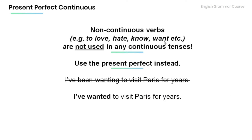Non-continuous verbs — for example, to love, hate, know, want, etc. — are not used in any continuous tenses. Make sure to use the present perfect instead. For example, the sentence 'I've been wanting to visit Paris for years' would be incorrect because the verb want cannot be used in any continuous tense. The correct form would be: I've wanted to visit Paris for years.